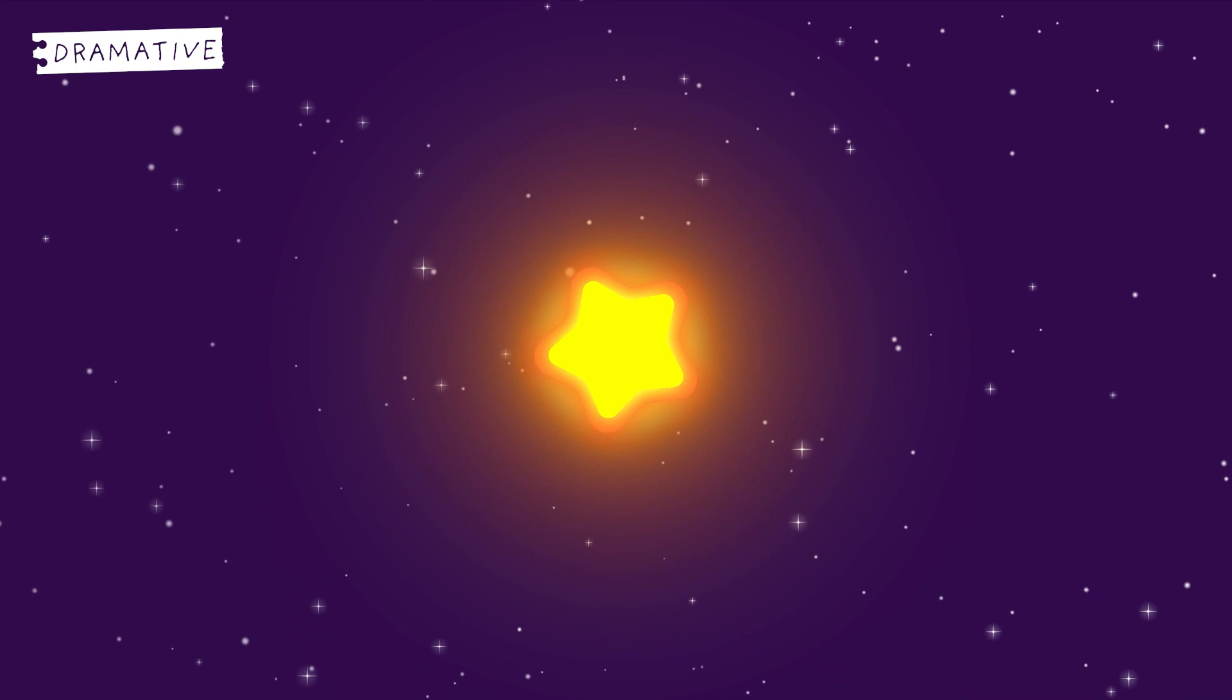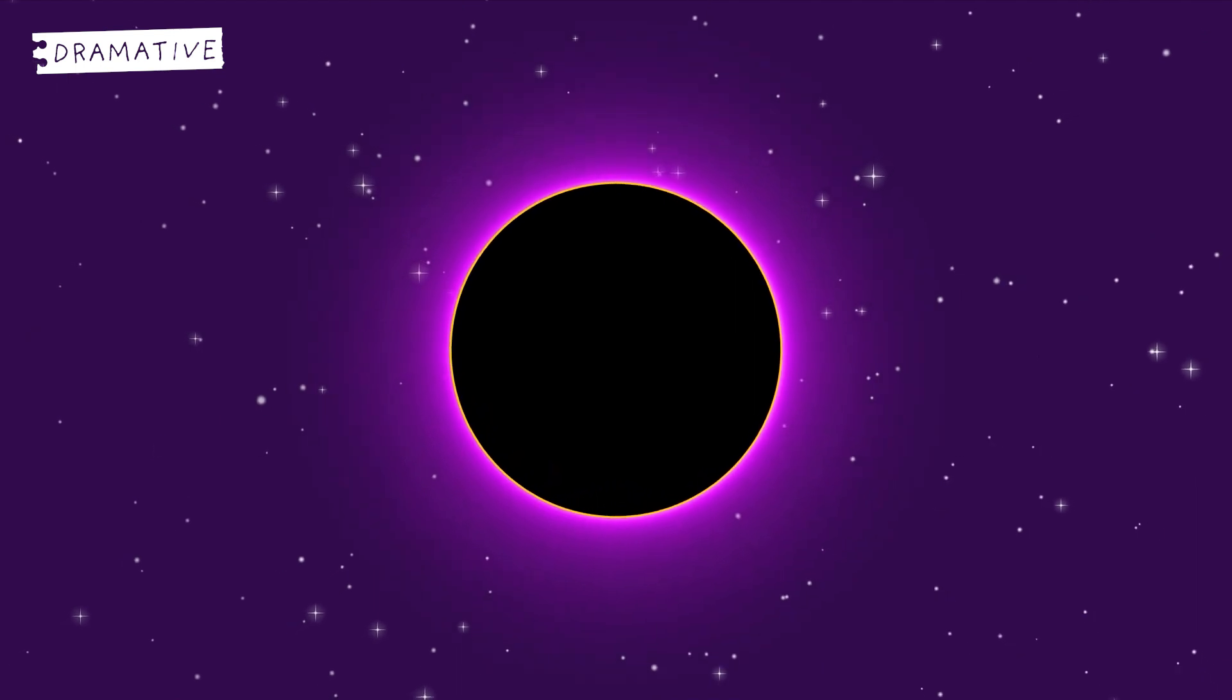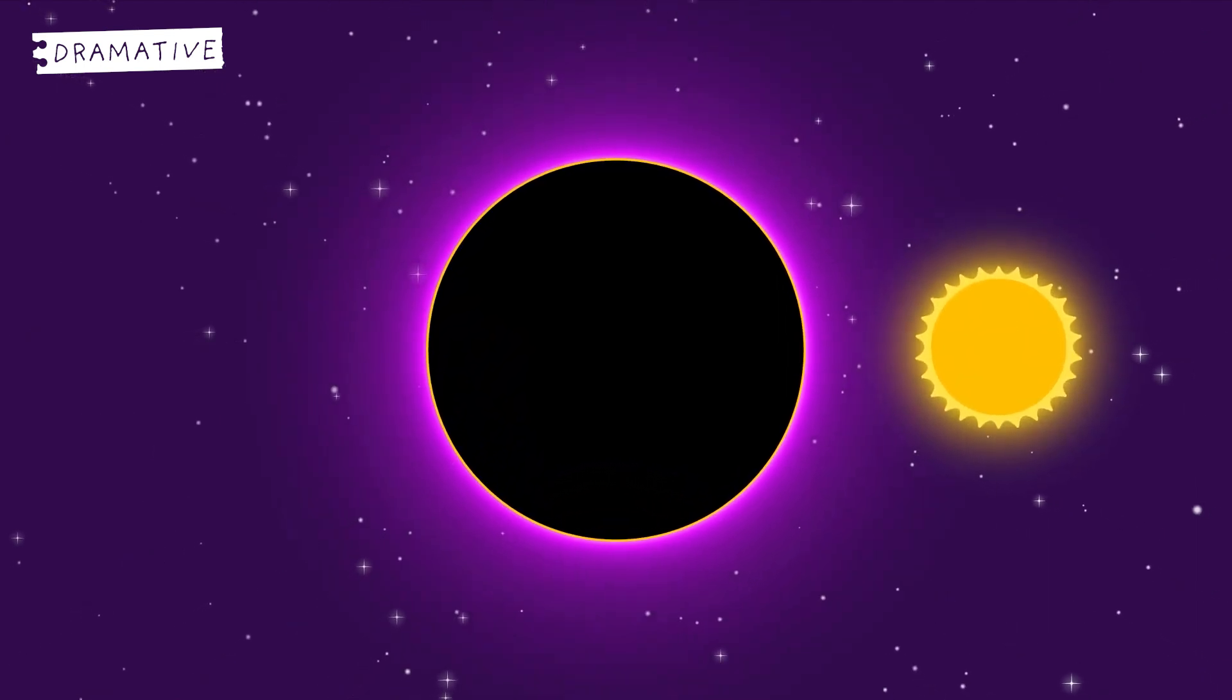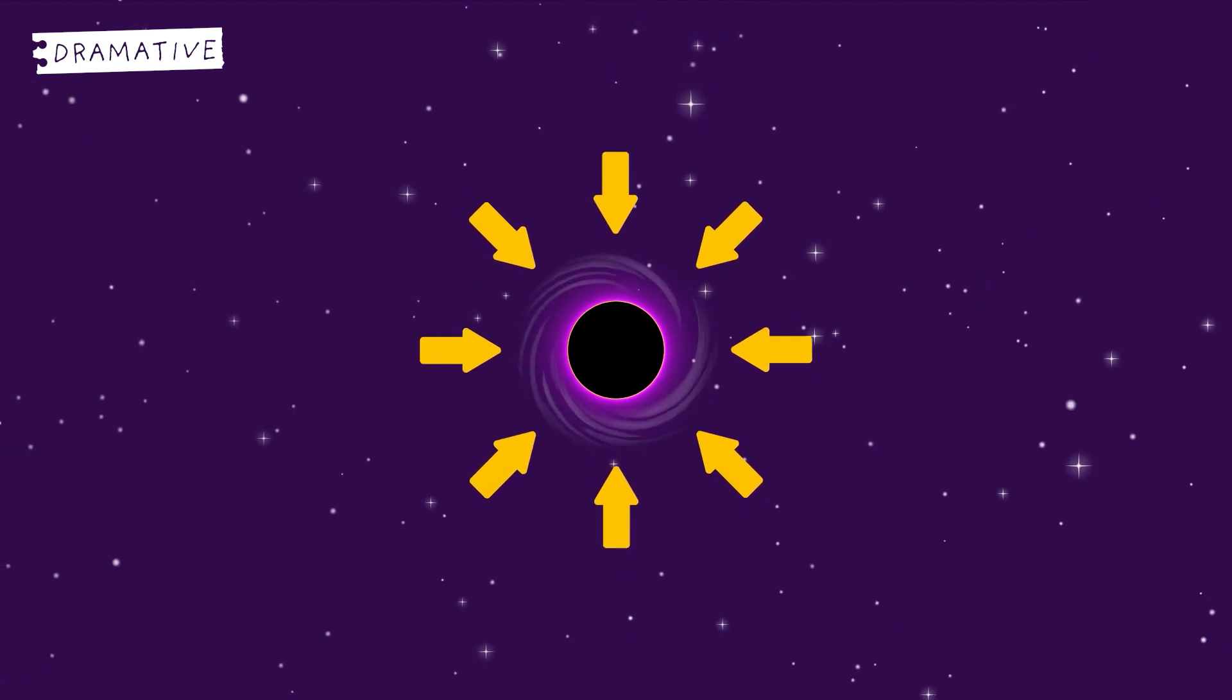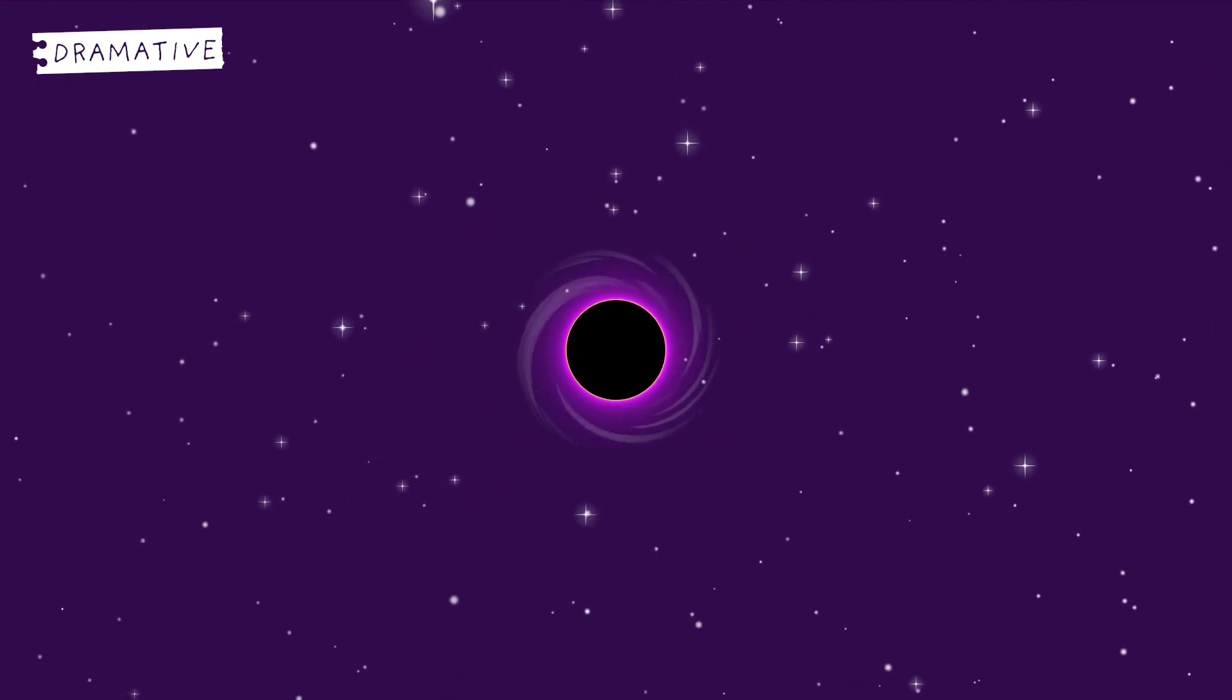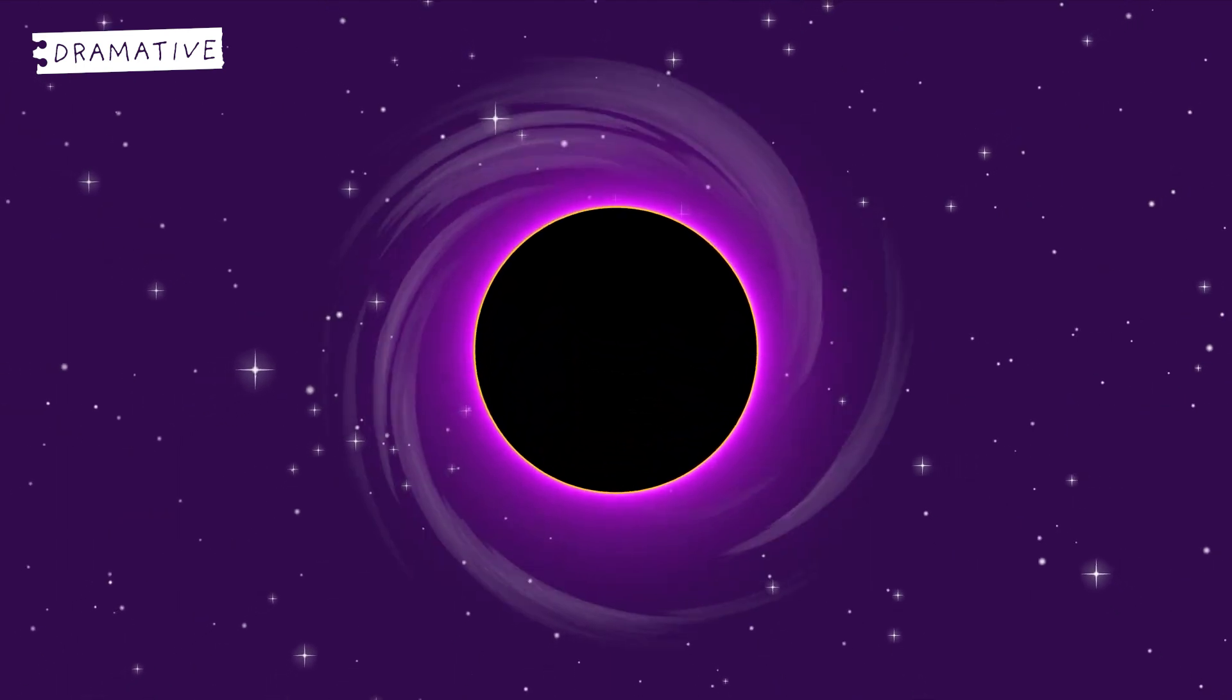Black holes are believed to be formed when a star dies. The star collapses in on itself. And as long as the remaining core is around three times larger than our sun, it transforms into a point in space with an unimaginably strong gravitational pull. Anything that dares to step inside the black hole's event horizon is then consumed by the black hole.